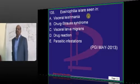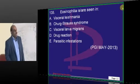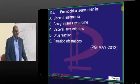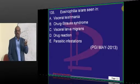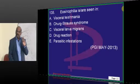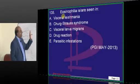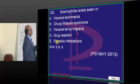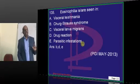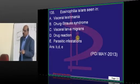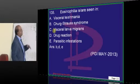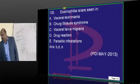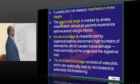Eosinophilia is a high-yielding topic. The examiner will ask about ABPA, tropical eosinophilia syndrome, hypereosinophilic myalgia syndrome. Drug reactions and parasitic infestations lead to eosinophilia — these are all scenarios to remember.